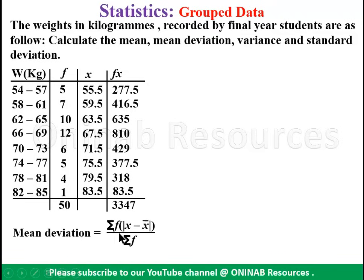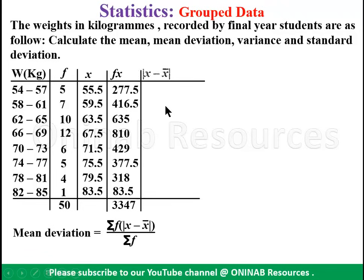Now we calculate the mean deviation. The formula is summation of f times the absolute value of x minus x-bar, divided by summation of f. Here x-bar is the mean we just calculated, which is 66.94. We create two additional columns: the absolute value of x minus x-bar, and f times the absolute value of x minus x-bar.